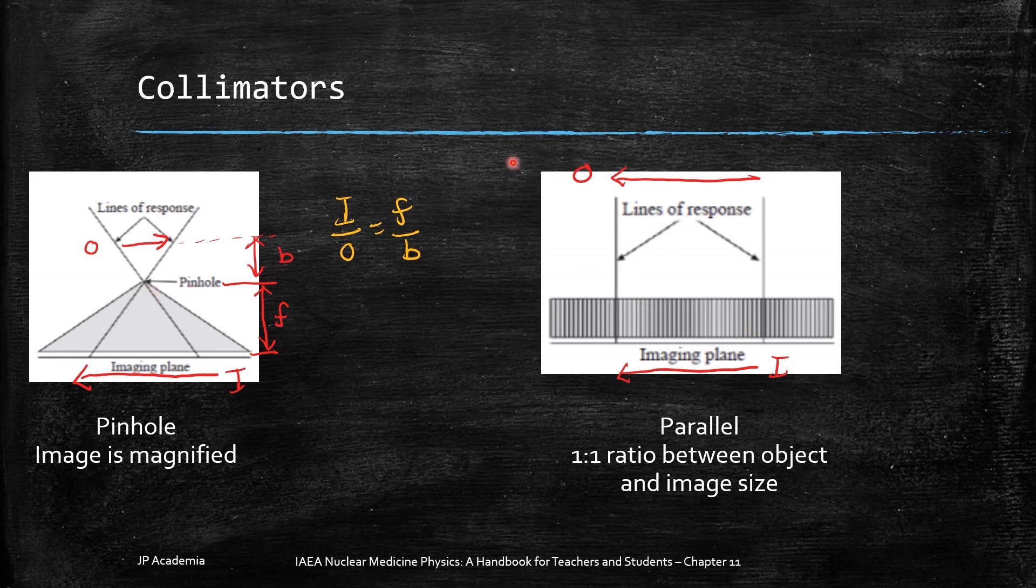For the parallel collimator, it is the most frequently used geometry and it has a 1 to 1 ratio between the object and the image size.